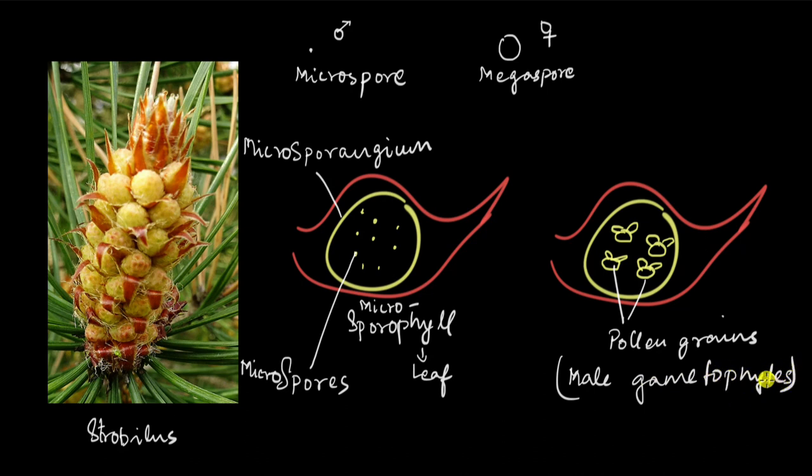You might remember from bryophytes and pteridophytes that gametophytes are much bigger. They are actually free-living plants that can live by themselves, not dependent on anything, and can produce their own nutrition. But here the male gametophyte is so tiny - the pollen grain you can hardly see with naked eyes.